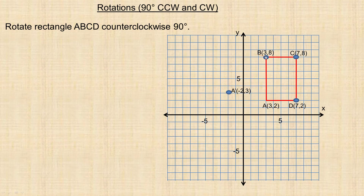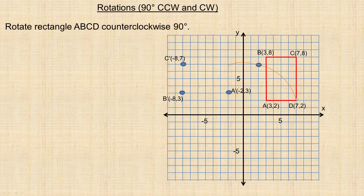Now let's do the same for point B. It rotates along a quarter turn to B prime. The triangle shows this side is 3 and the up is 8, so they switch: 8 to the left and up 3 — that's B prime. For C prime, the point was 7 right and 8 up, so it becomes 8 horizontal and 7 up. We do D as well, giving us D prime. Drawing in our rectangle, that's the 90-degree counterclockwise rotation of the original.